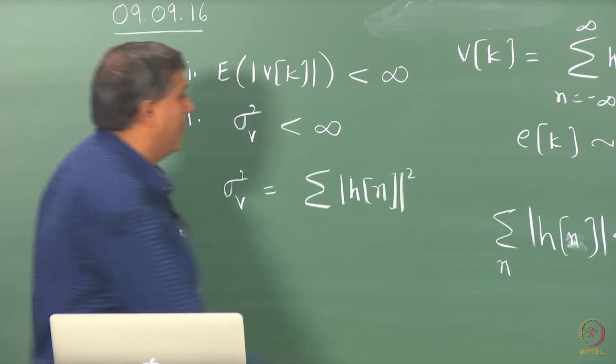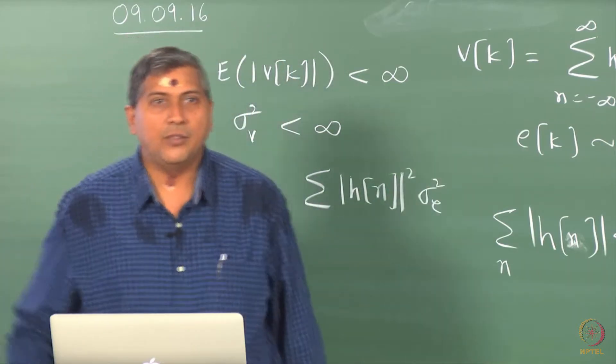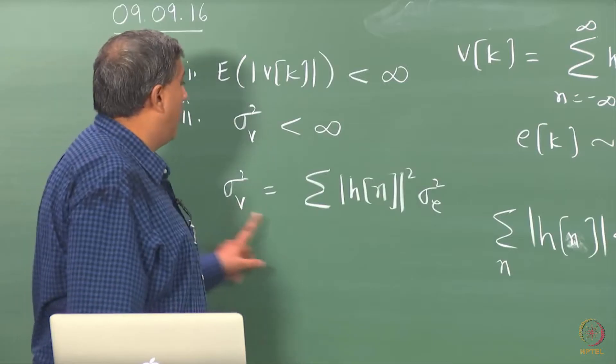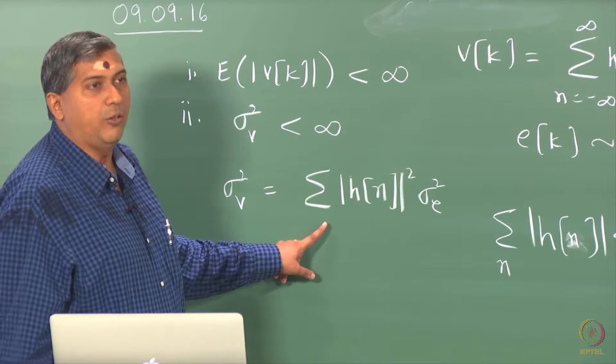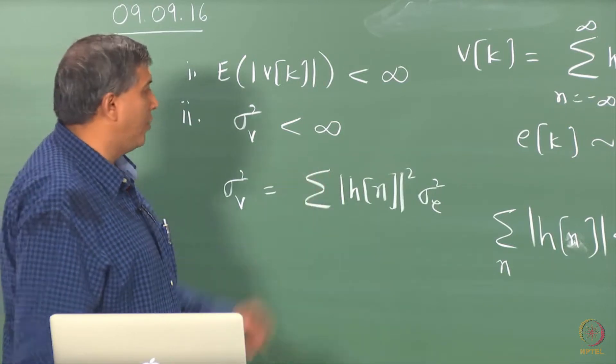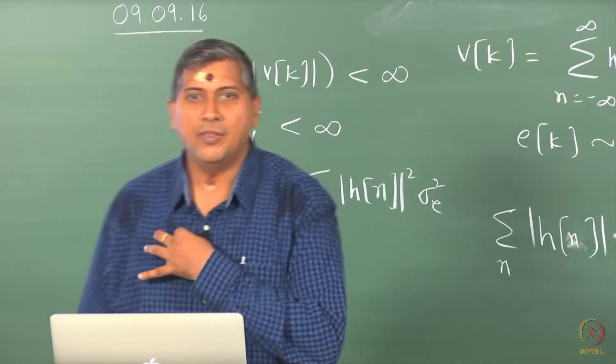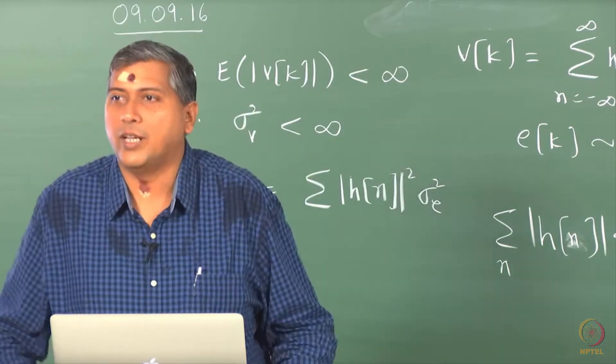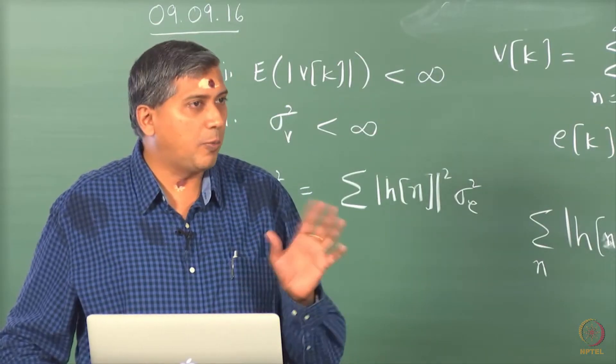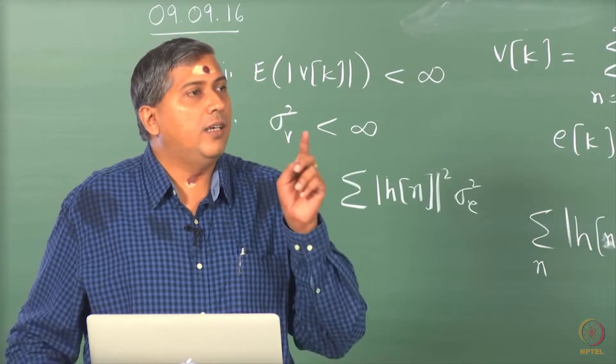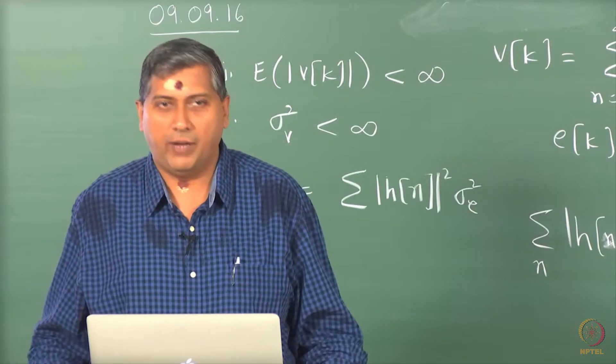Right, correct. So sigma square V is anyway given to be finite. So the finiteness of sigma square V solely depends on this. Now, we know from the theory of sequences, right, properties of sequences, that if a sequence is absolutely convergent, then the square is also convergent, not the other way around, right? You should recall these properties of sequences that absolute summability does guarantee the summability of the squared one.